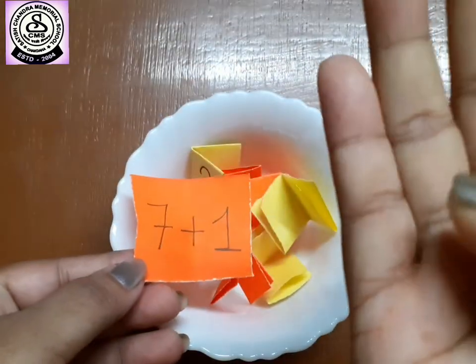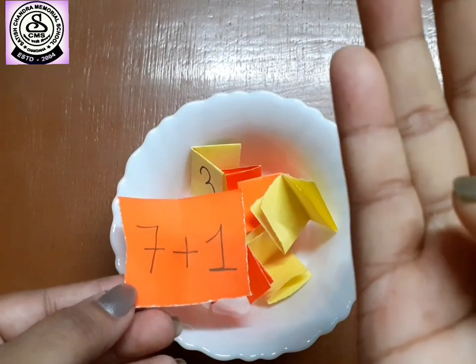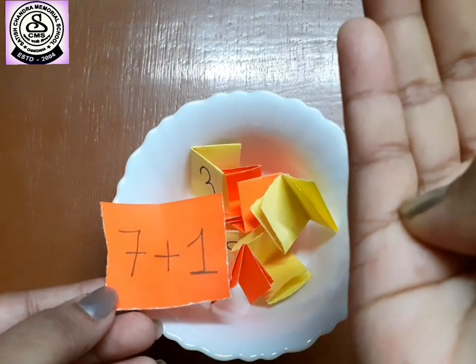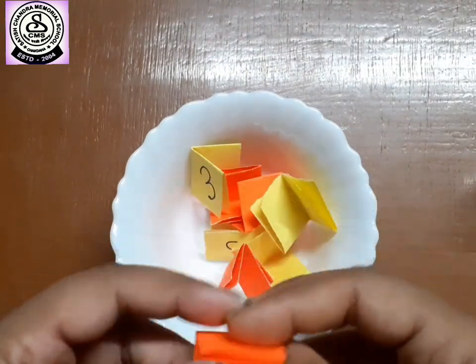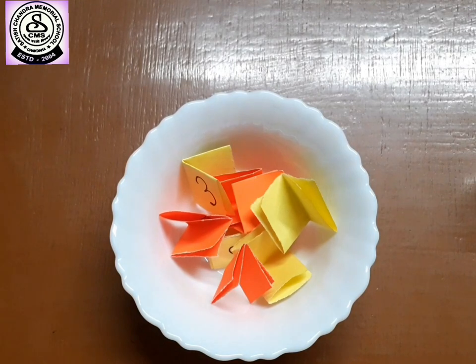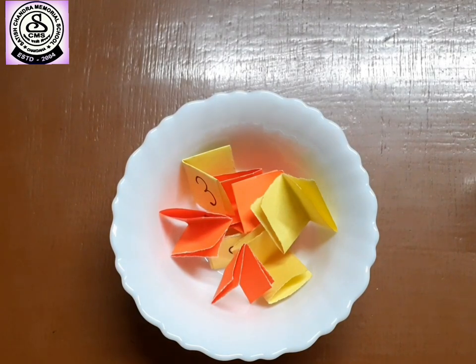So, after seven, if we go one house, we get eight. So, seven plus one will give us eight. This kind of game you can play at your home.